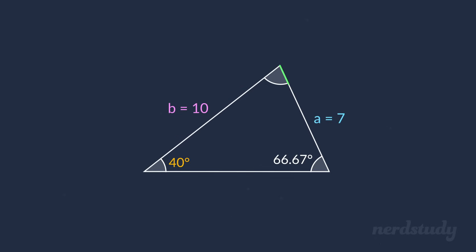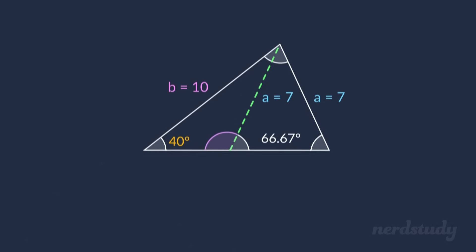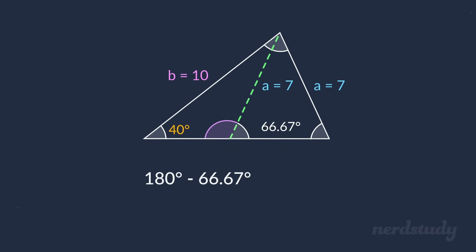Assuming the side length of 7 on this side as well, we know this angle is also 66.67 degrees. Now what is the process we would use next to find this angle over here? Well, it would be to subtract 180 by 66.67 degrees to get 113.33 degrees here.